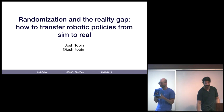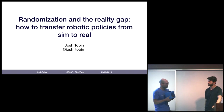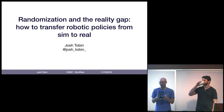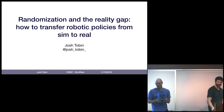Hi everyone, welcome to lecture. Today we have a guest lecturer, Josh Dobin. Josh got his PhD in AI from Berkeley, has been a research scientist at OpenAI for several years, and is one of the world-leading pioneers in Sim2Real — how to make robots learn in simulation and have it still somehow work well in the real world, and that's exactly what we're going to learn about today.